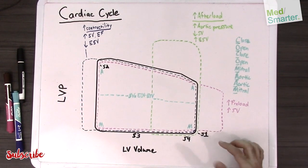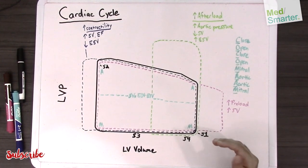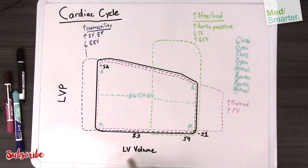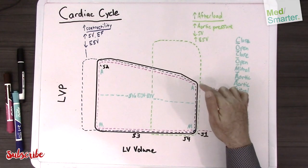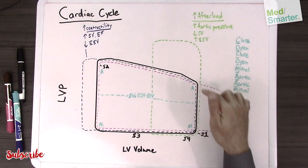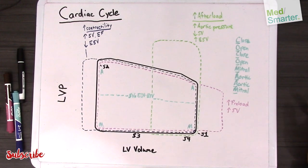So now we have the isovolumetric contraction phase. So this means isovolumetric, so the volume isn't changing. So we have the volume here at the bottom of the graph. So the volume isn't changing, but the heart is contracting. So the heart is basically contracting up to build enough pressure for it to overcome the pressure in the aorta.